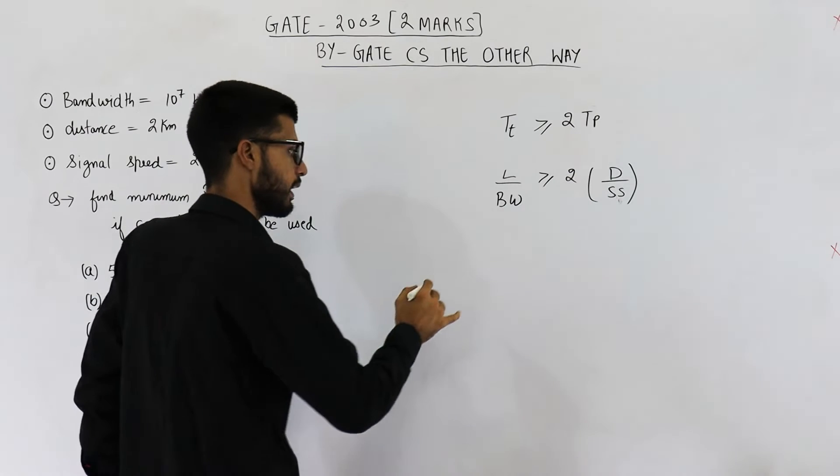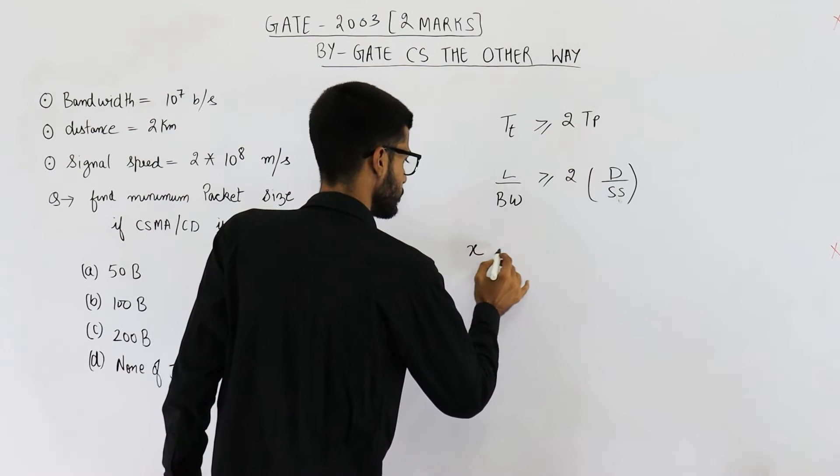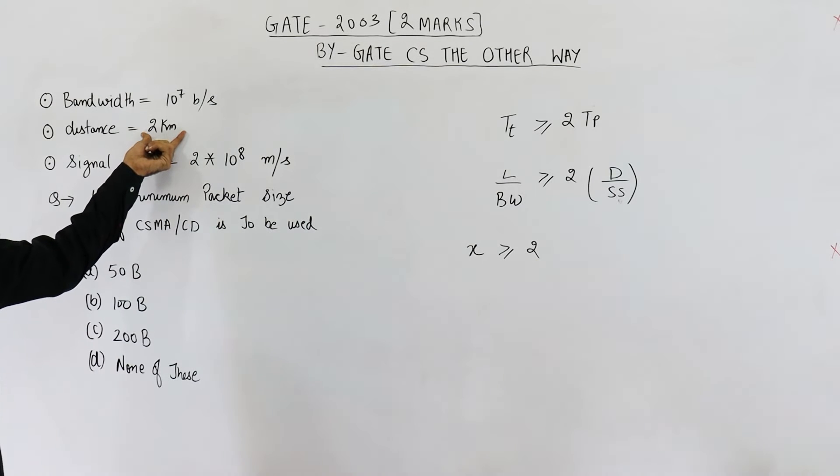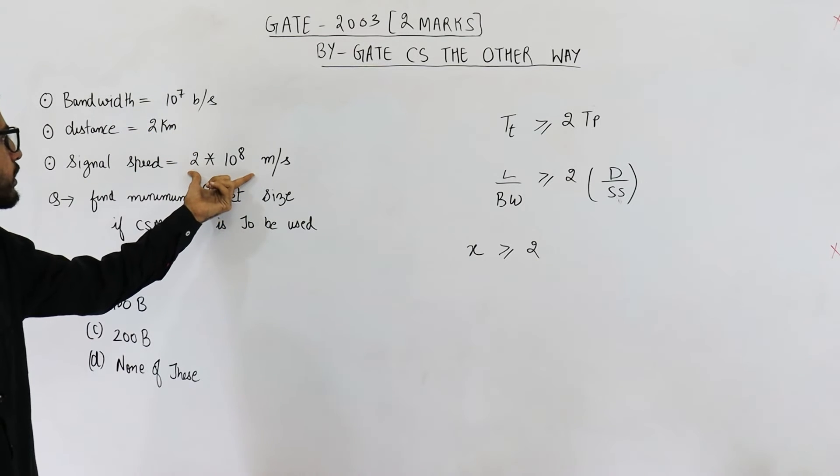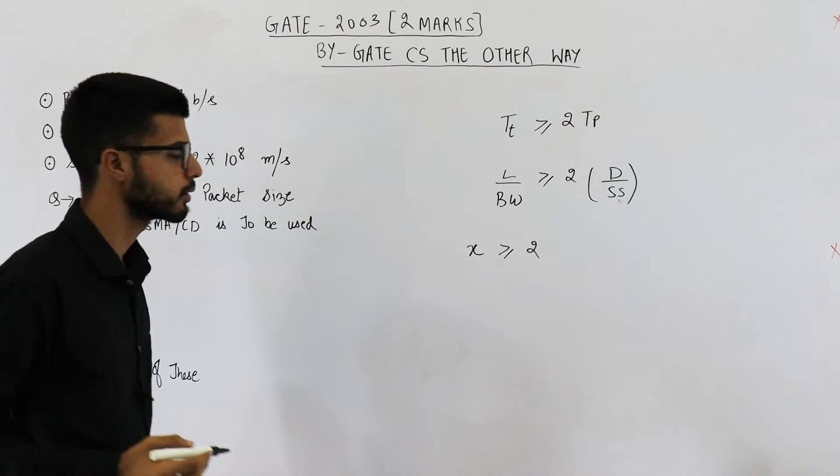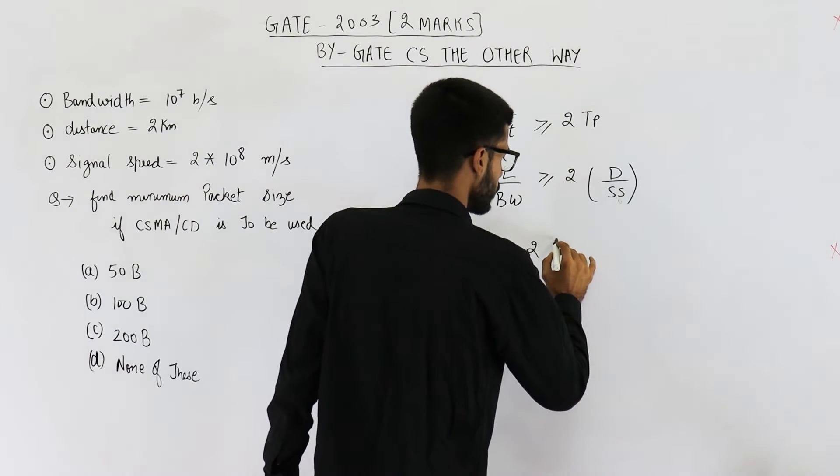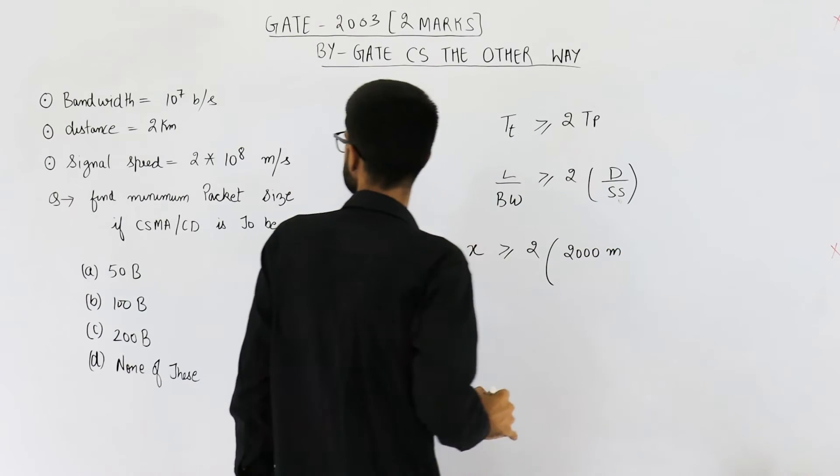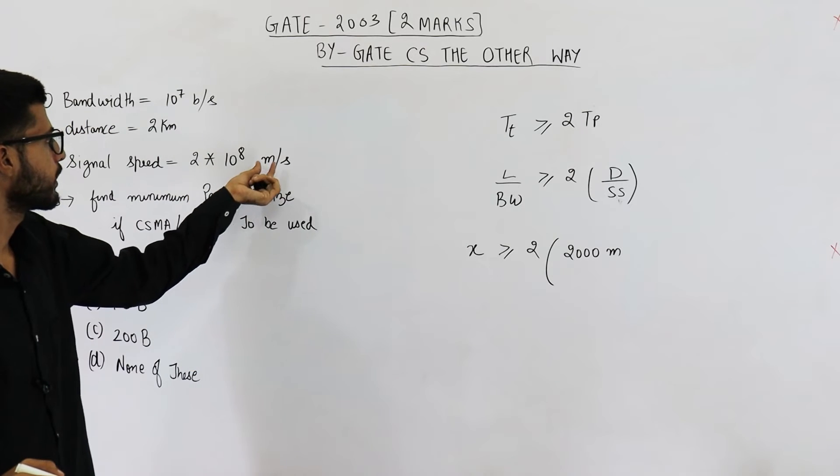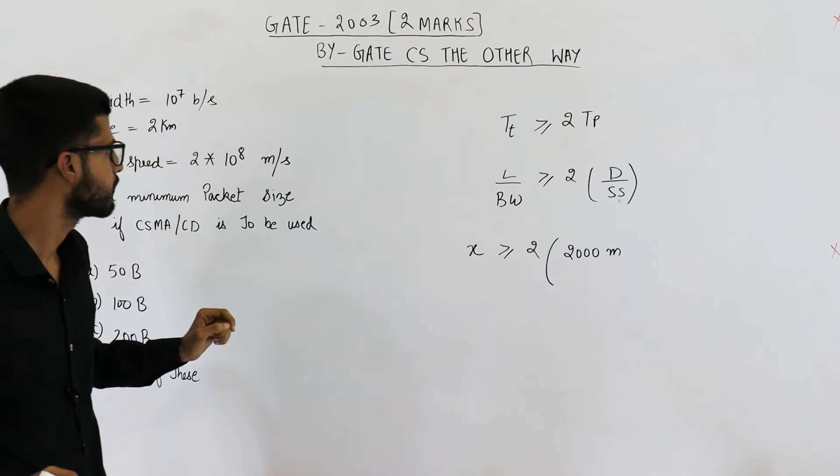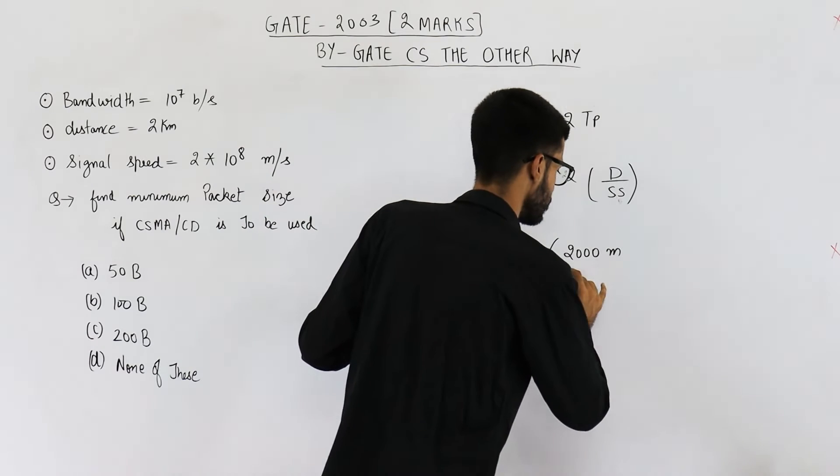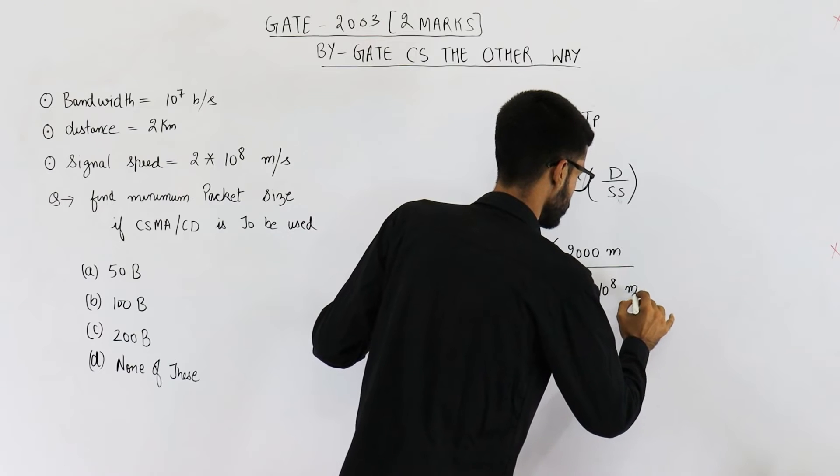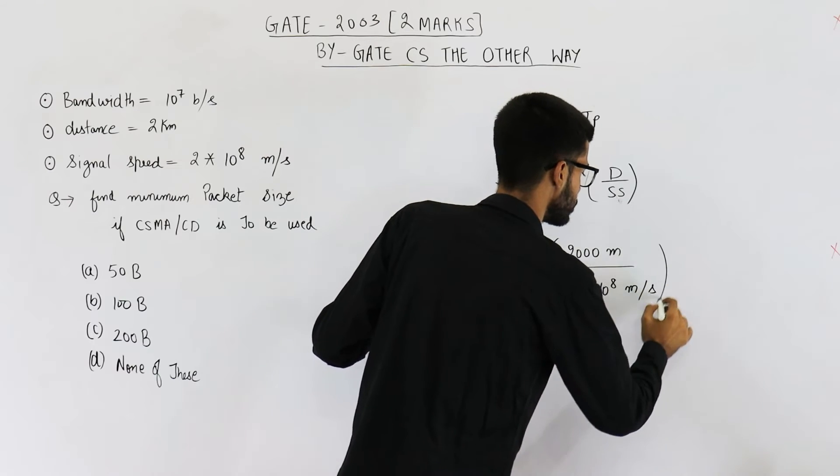Now let us assume that length of packet is X. X is greater than equal to twice of distance which is 2 kilometer divided by signal speed which is 2 into 10 raised to the power 8 meter per second. So 2 kilometer can be written as 2000 meter. And signal speed is already in meter per second. So divided by 2 into 10 raised to the power 8 meter per second.